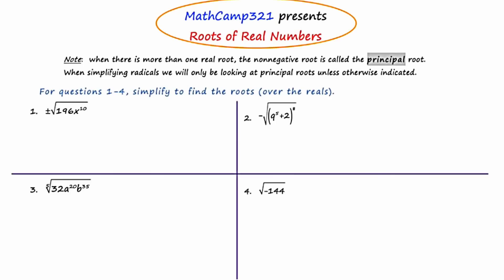In number one, we're faced with something odd as there is a plus or minus in front of our expression. Our textbook does that, and when this happens you just have to make sure there's plus or minus in front of your answer. In number two, the expression is preceded by a negative, so that just means our answer is going to be preceded by a negative also — it means the opposite of. So in number one, the actual question is: find plus or minus the square root of 196x to the tenth, and our answer is going to start with plus or minus. Now let's focus first on the 196.